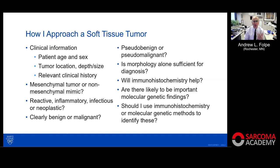There's a lot that goes into evaluating a soft tissue tumor. We have to ask: is it a mesenchymal tumor or a non-mesenchymal mimic? At least half of what I see as a soft tissue consultant are carcinomas, infections, and various other things mimicking sarcomas. Is it reactive, inflammatory, infectious, or a neoplasm? If it is a neoplasm, are there features that clearly indicate benign or malignant? The problem in soft tissue is the many pseudo-benign and pseudo-malignant entities.